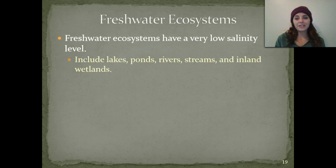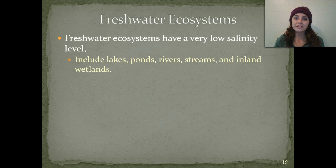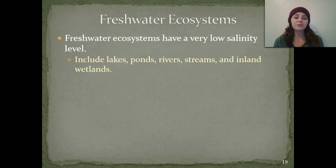Freshwater ecosystems have a very low salinity level compared to that of their saltwater ecosystems in the oceans. Freshwater ecosystems include lakes, ponds, rivers, streams, as well as inland wetlands.